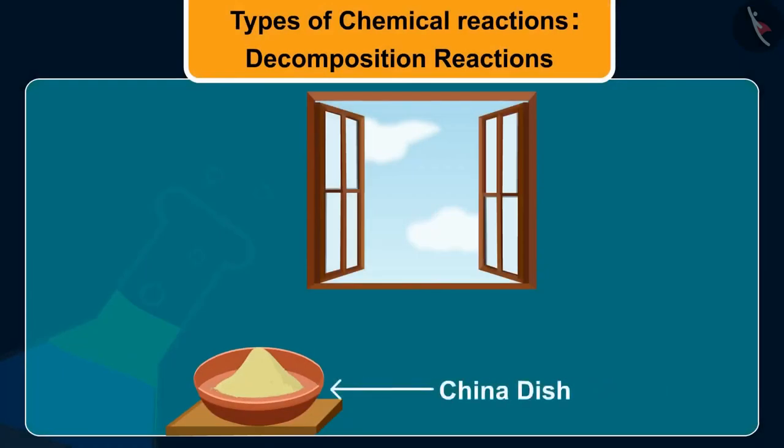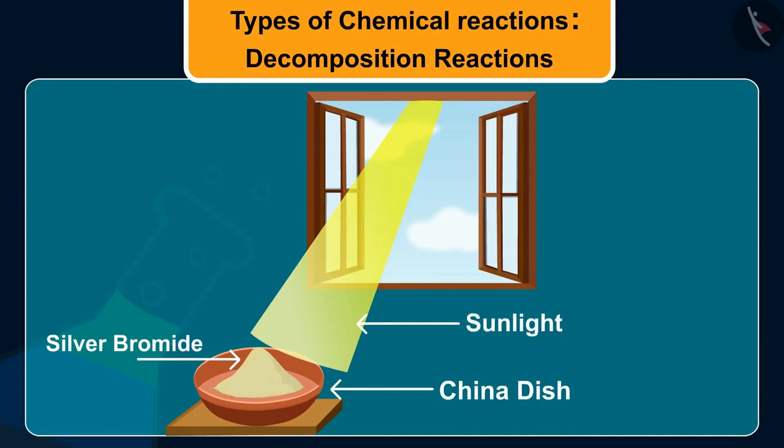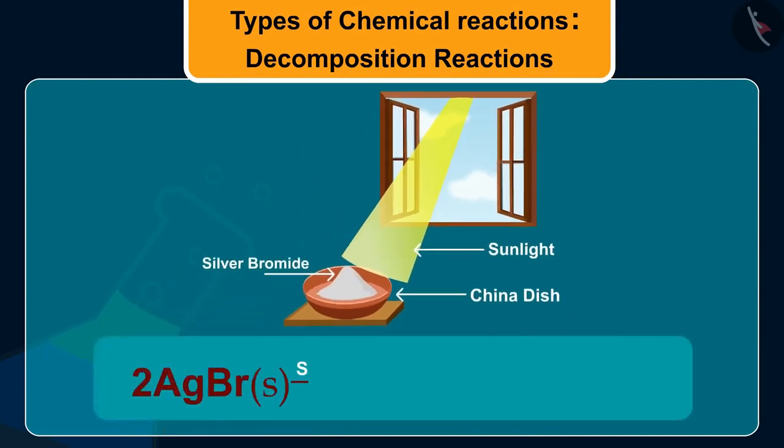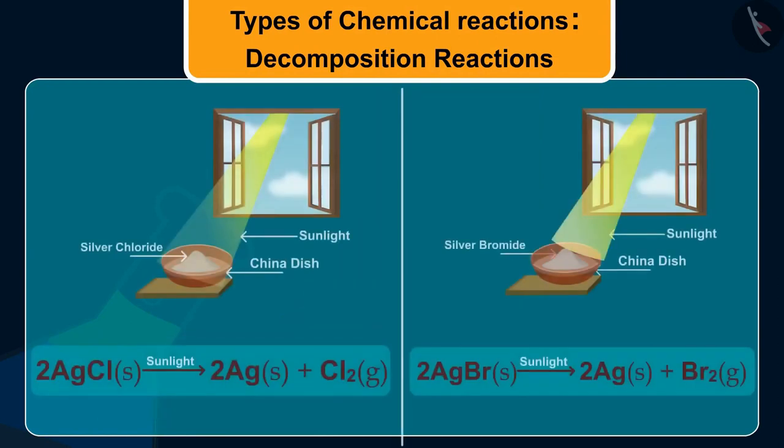Silver bromide also behaves in a similar way. The reaction shows that yellow coloured silver bromide decomposes by the action of sunlight to give out silver and bromine. These reactions are used in black and white photography.